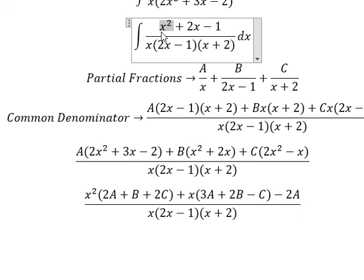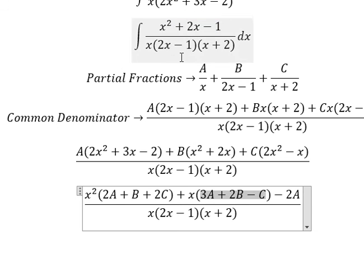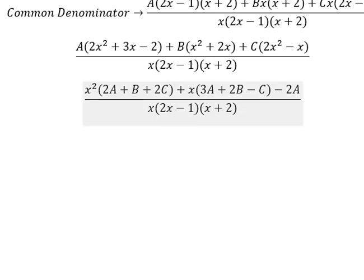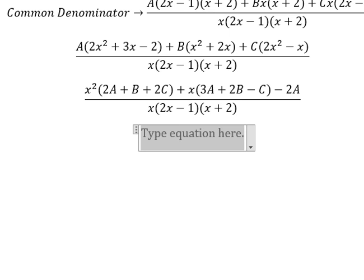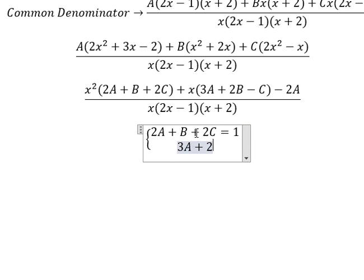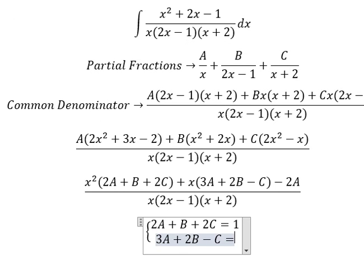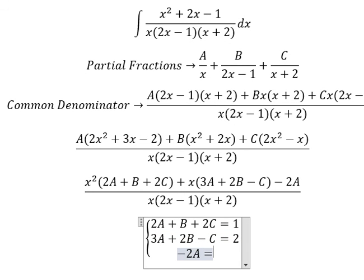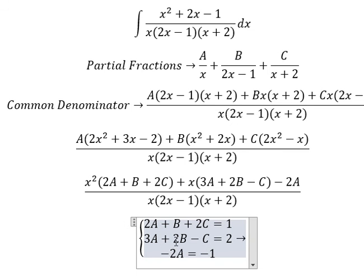Now, if we look at the coefficients, we have s squared, which means this equals coefficient 1. So 2A plus B plus 2C equals 1. Similarly, 3A plus 2B minus C equals 2. And negative 2A equals negative 1. Now we create the system of equations: 2A plus B plus 2C equals 1; 3A plus 2B minus C equals 2; and negative 2A equals negative 1.